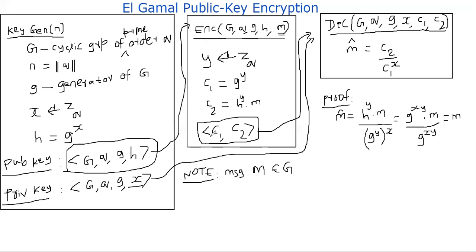So from C1, C2, why can't an attacker recover M? That's a natural question to ask. How is C2 computed? C2 is computed by h power Y times M. Y itself is uniformly chosen from the group ZQ.